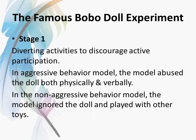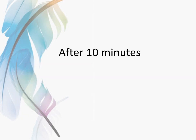In the Bobo Doll experiment there were three stages. In stage one, the children were presented with diverting activities like stickers, pictures, and prints to discourage active participation and encourage only observation. In the aggressive behavior model, the model abused the doll both physically and verbally in front of the children. In the non-aggressive behavior model, the model ignored the Bobo doll and played with other toys. After 10 minutes, the behavior models left the room.